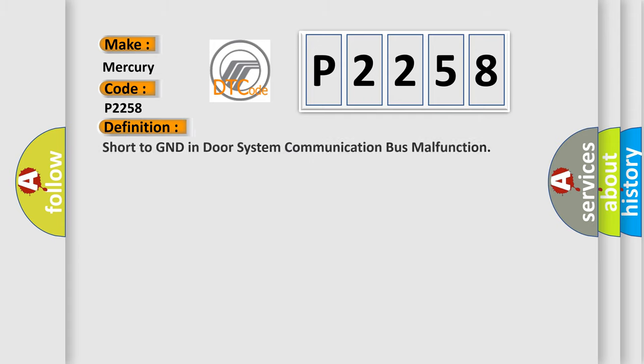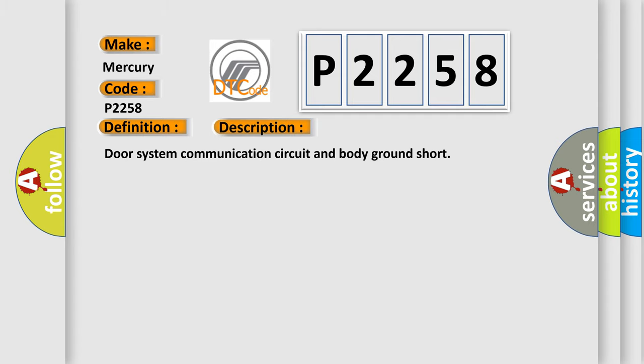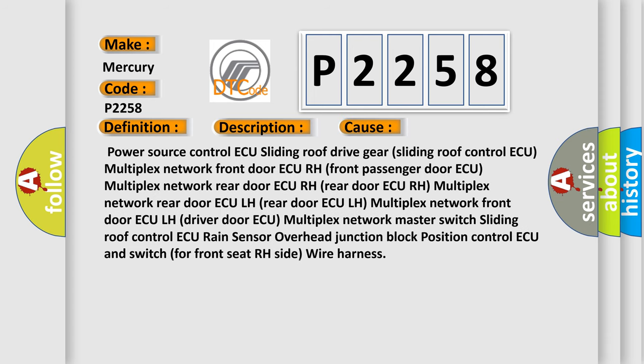The basic definition is: Short to GND indoor system communication bus malfunction. This is a short description of this DTC code: Door system communication circuit and body ground short. This diagnostic error occurs most often in these cases: Power source control AQ, sliding roof drive gear, sliding roof control AQ, multiplex network, front door AQ RH, front passenger door AQ multiplex network, rear door AQ RH multiplex network, rear door AQ LH multiplex network, front door AQ LH, driver door AQ multiplex network, master switch, sliding roof control AQ, rain sensor, overhead junction block, position control AQ, and switch for front seat RH side wire harness.